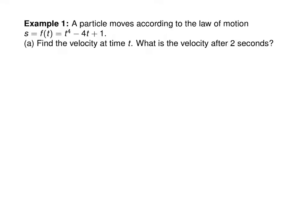A particle moves according to this law of motion, s = f(t) = t^4 - 4t + 1, measured in meters. So how do you find the velocity function? Derivative. S prime of t is equal to v(t), which is 4t^3 minus 4. There's the velocity function.